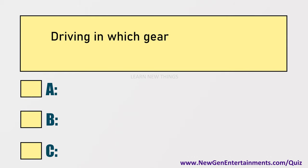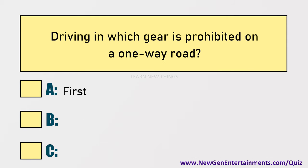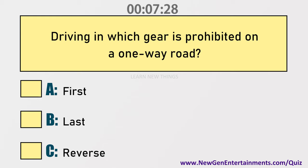Driving in which gear is prohibited on a one-way road? Options are: A) Fast, B) Last, C) Reverse. Answer: Option C, Reverse.